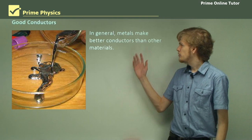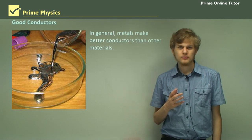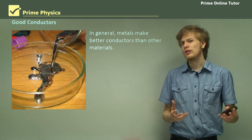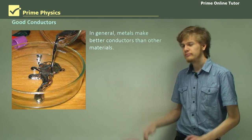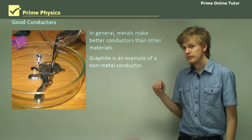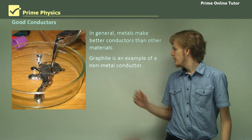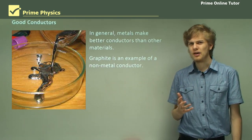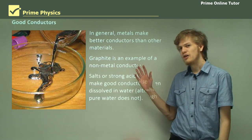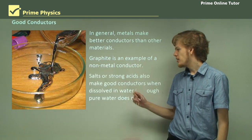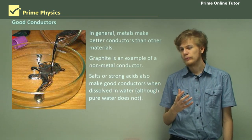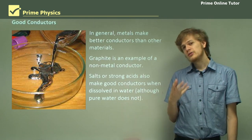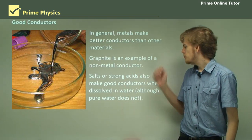In general, metals make better conductors than other materials. So the best sort of conductor is metal — whether that's iron, copper, aluminium, or mercury. Graphite, which is a little like charcoal, is an example of a non-metal conductor. It's made out of carbon. Salt and strong acids can also make good conductors, as long as they're dissolved in water. So graphite, salt, and strong acids are all examples of things that are conductive even though they are not made out of metal.